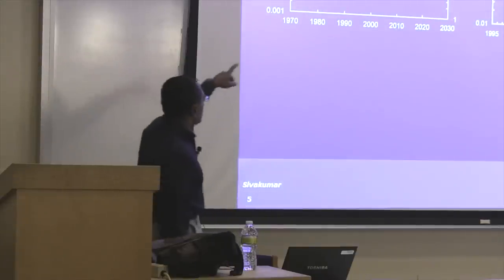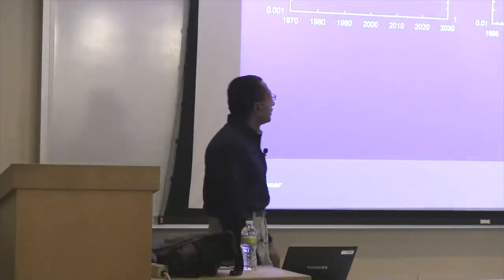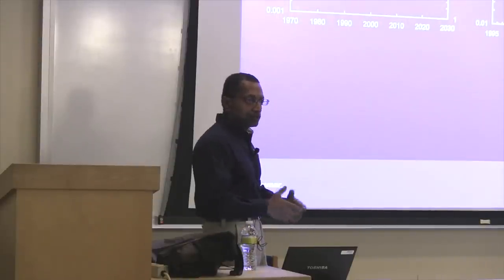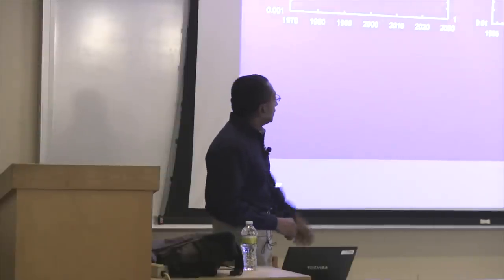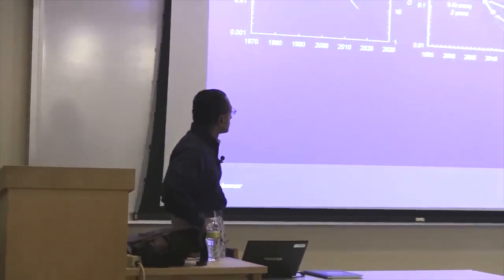Looking at these two plots: on the left is feature size over time, and on the right is the area of an SRAM cell as a function of time — both on a log scale. Basically the feature sizes get smaller by 0.7x every generation, every two years — you try to shrink feature sizes by 30%. Your area goes down by half every two years because it's the square of that. That's how you're able to pack twice as many transistors onto a chip every year, and the SRAM cell has evolved considerably over multiple process generations.